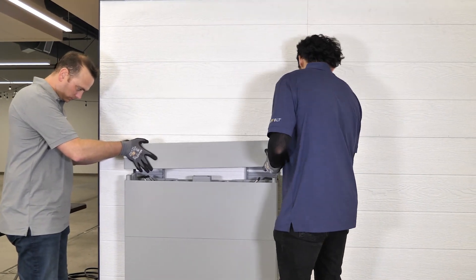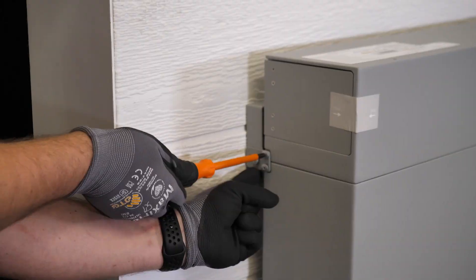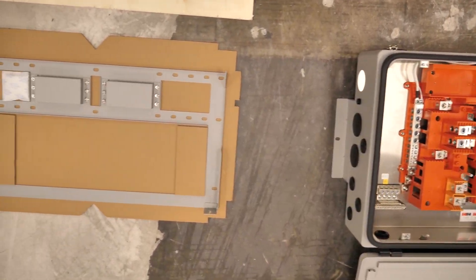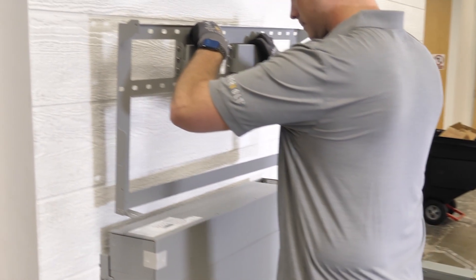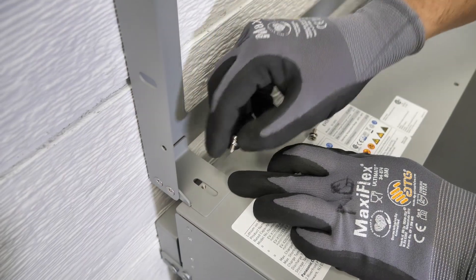Next we attach the BMS. Just like before, locate the inverter mounting bracket, attach it to the top of the BMS with these set screws.